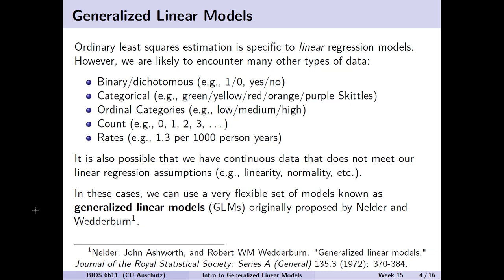What we've seen this semester is that ordinary least squares estimation is specific to our linear regression models, where we've been focusing on a continuous outcome. It turns out we're likely to encounter many other types of data in the real world. For example, there may be binary or dichotomous data with an indicator 1-0 or yes-no format. We might have something categorical like green, yellow, red, orange, and purple Skittles, or ordered categories like low, medium, and high.